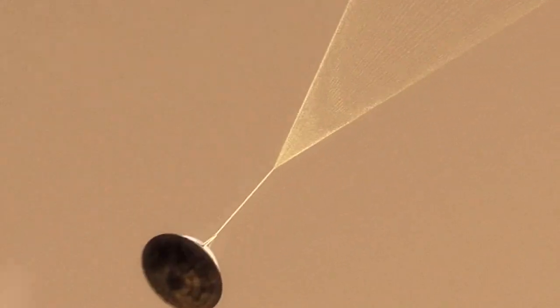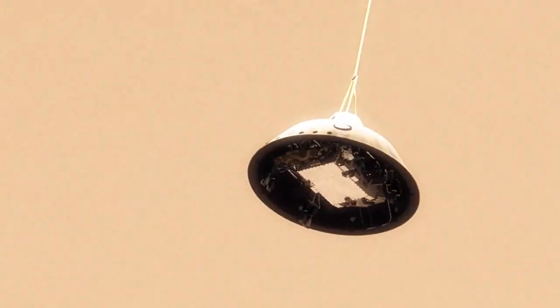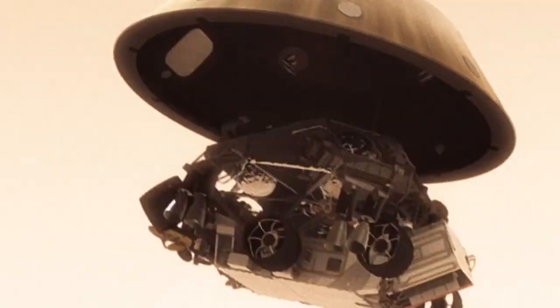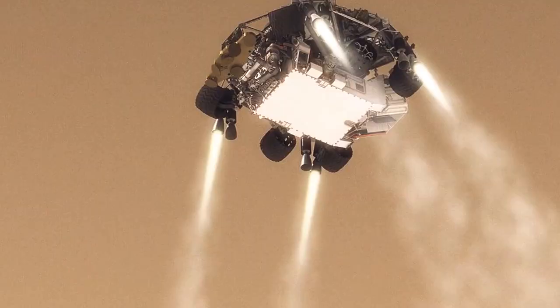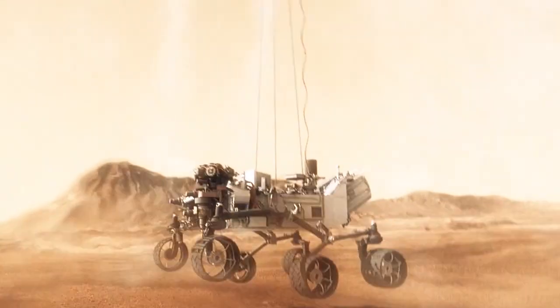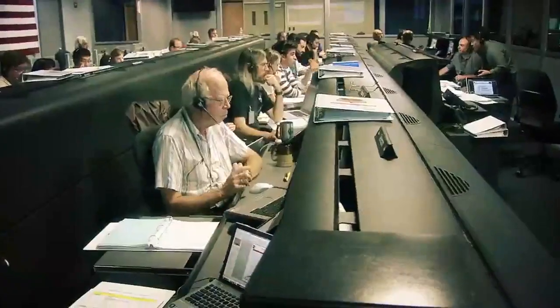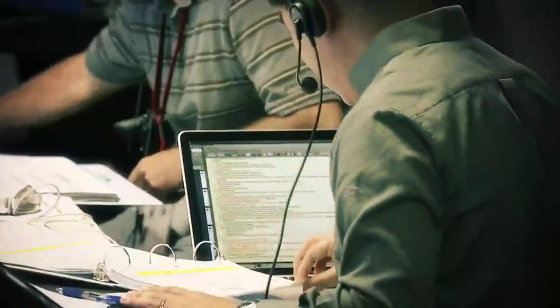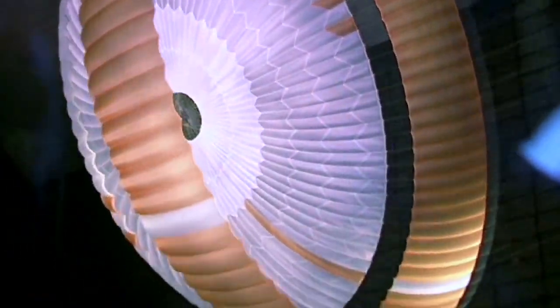This parachute slowed the rover more to about 320 km per hour, or 90 meters per second. Finally, after rockets decelerated it completely, the rover was lowered to the surface of Mars. Every step of this dance was carefully choreographed and rehearsed in many experiments here on Earth. But how could NASA engineers be sure that their designs would work on a totally different planet?